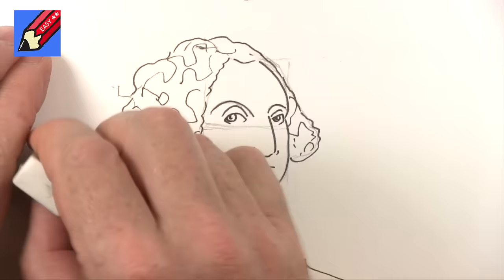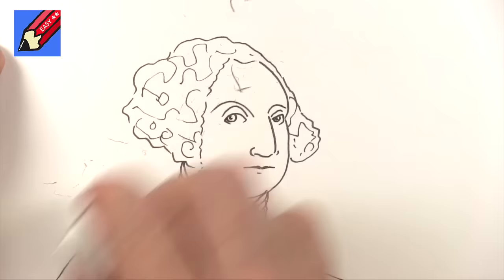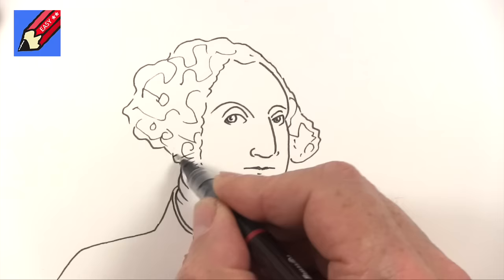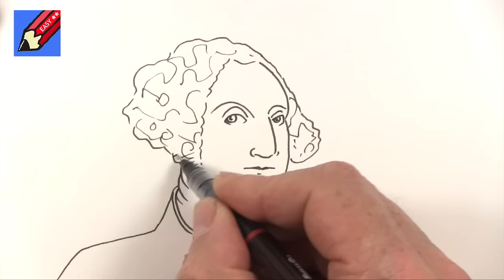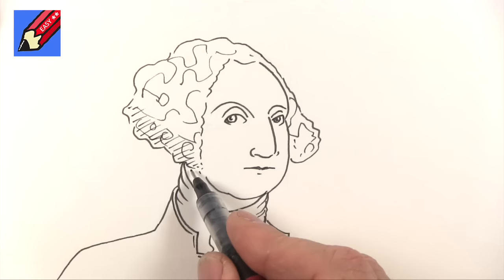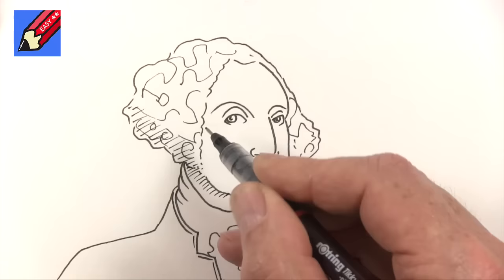When you are sure that the ink is dry, then erase all those pencil lines so people won't know how you worked it out and they'll think you're incredibly clever. I'm going to put a bit of shading in just around there and maybe a bit of shading underneath his chin. I'm going to shade in just underneath his eyebrow.